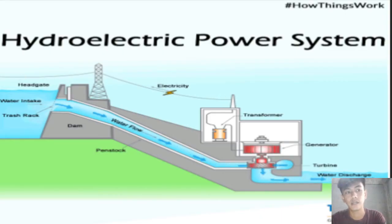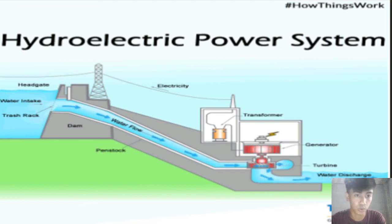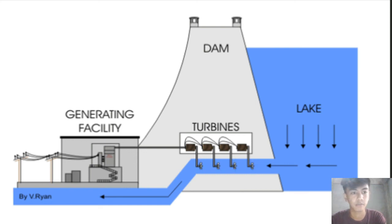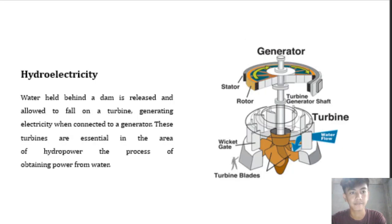This is how a hydroelectric power system works: water flowing from the dam or spillway goes to the turbine and generates electricity. The water from the lake passes through a penstock and generates electricity from the turbines. Hydroelectricity works by releasing water held behind a dam, allowing it to fall onto a turbine, which generates electricity when connected to a generator. These turbines are essential in the area of hydropower — the process of obtaining power from water.